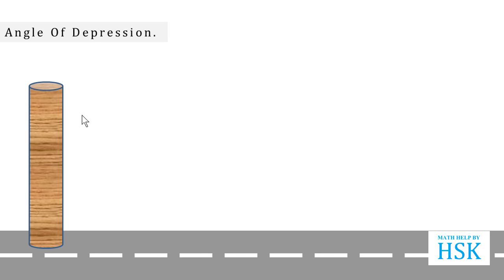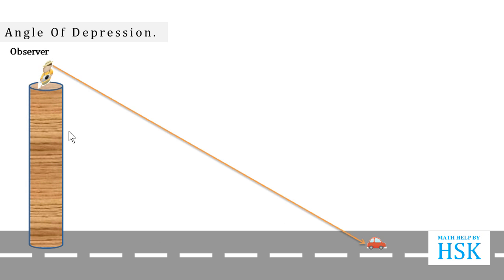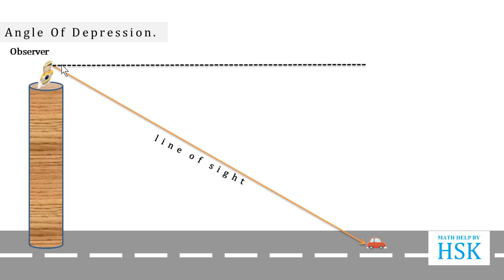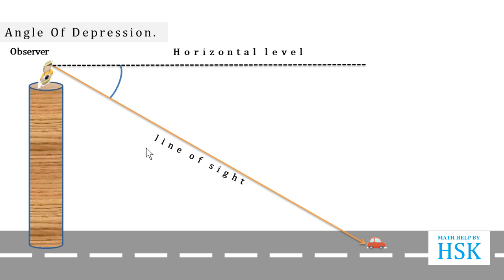Now, angle of depression. Consider that this is a road and there is a tower, with an observer standing on it. He views a car below. This will be the line of sight of the observer, and this will be the horizontal level. The angle formed between the horizontal level and the line of sight, when the object is below the observer, is known as the angle of depression.